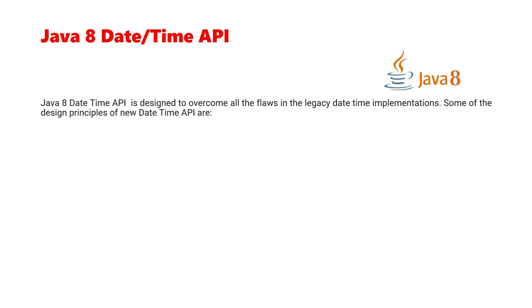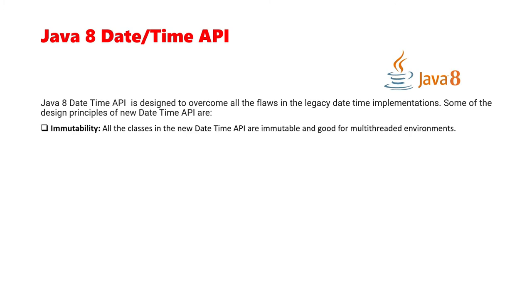Now let's talk about the Java 8 DateTime API. The Java 8 DateTime API is designed to overcome all the flaws in the legacy DateTime implementation. One of the key design principles is immutability — all the classes in the new DateTime API are immutable and suitable for multi-threaded environments.